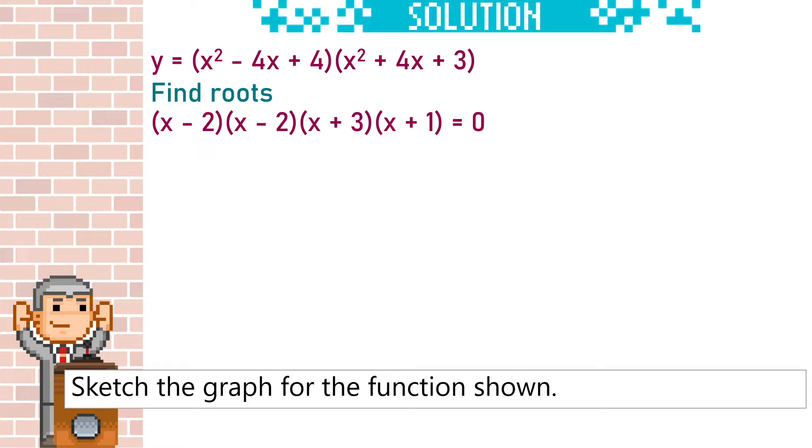Next, we're going to get each of those brackets equal to 0 and we get the roots of x equals 2, x equals 2, x equals minus 3 and x equals minus 1.